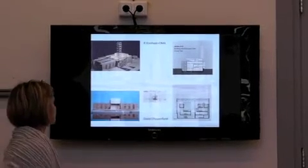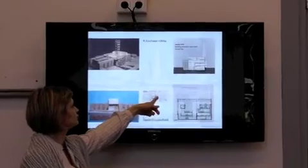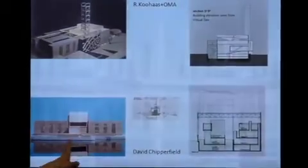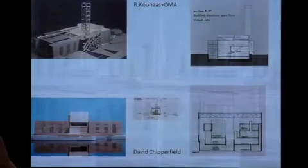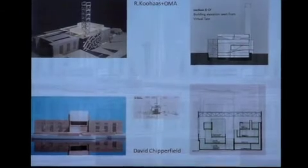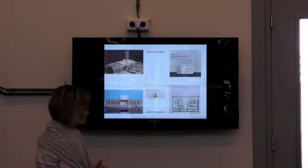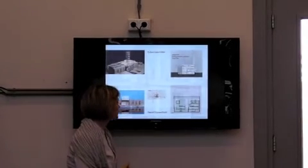The same goes with Chipperfield, particularly in the second stage. For the first stage, he proposed to leave the chimney, but for the second stage, he proposed to tear down the chimney—the strongest symbol of the industrial building—along with the other very strong symbol, the empty spaces.